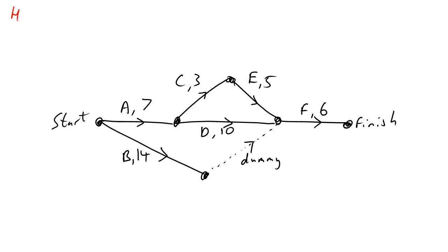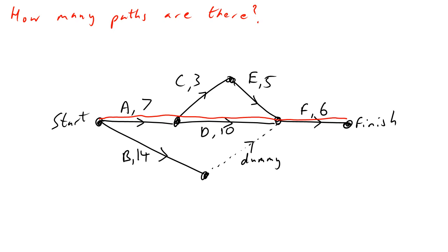So my first question is: how many paths are there in this simple example? Going straight through the middle, A–D–F goes from start to finish — that's one path. Then we go A–C–E–F as a green path, and then a blue path which goes B through the dummy (which we ignore) and then F. So let's add up the totals for these to help us determine which is the critical path — there are three paths: green, red, and blue.